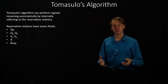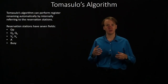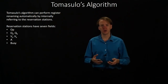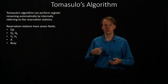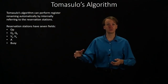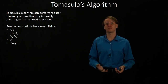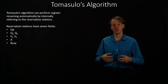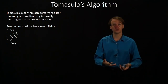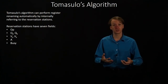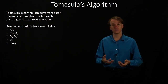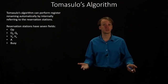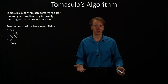Tomasulo's algorithm performs register renaming automatically for us just by referring to which instruction is going to compute data for us. Essentially we have a huge pile of extra registers in our hardware, one corresponding to each of the reservation stations that we've got.